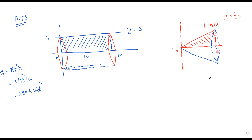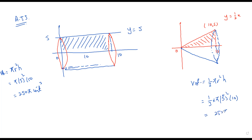The volume of a cone is (1/3)πr²h. Here the radius is 5 and height is 10, giving 250π/3 cubic units. I've set these up intentionally so that we can verify with the integration formula.